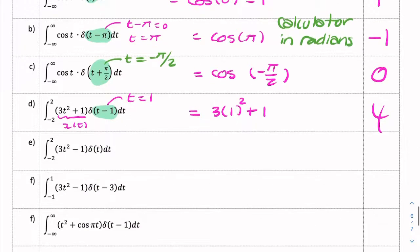Next question, very similar, but this time the impulse is centered at 0, so t equals 0. So your answer will be x of 0. x of 0 is going to be 3 times 0² minus 1, and that's just minus 1.